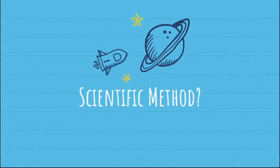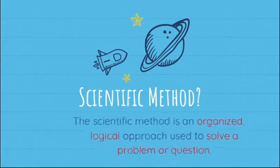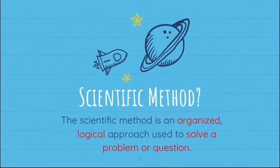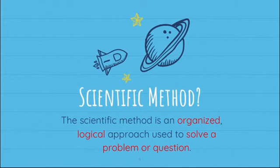So what is the scientific method? The scientific method is an organized, logical approach used to solve a problem or a question. Take note of the words organized and logical approach. We use the scientific method in order to solve a problem or a question, and we follow a series of steps in order to make this method possible.